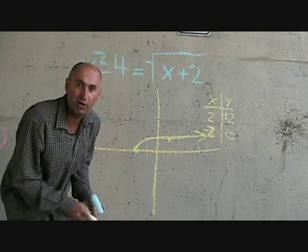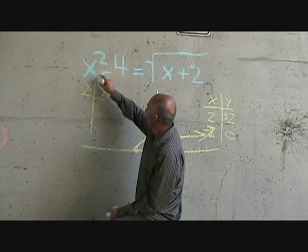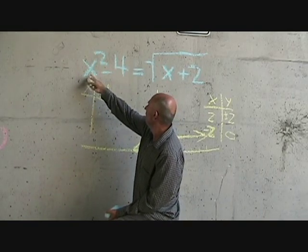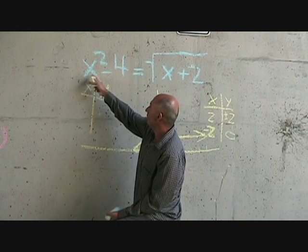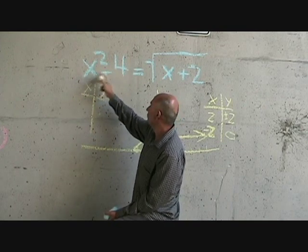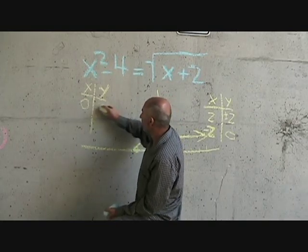This function, if we do a table of contents for this guy, if you put x is equal to 0, this is going to be 0, 0 squared is 0. 0 minus 4 is just going to be negative 4. So when x is 0, y is negative 4.